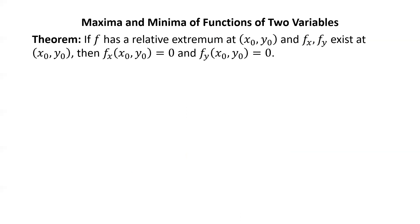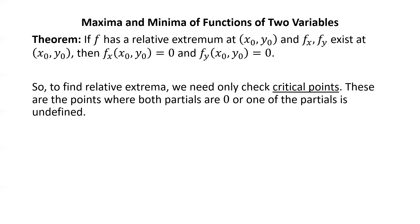An important theorem: if a function f of two variables has a relative extremum at the point (x₀, y₀), and the partial derivatives with respect to x and y exist at (x₀, y₀), then those partial derivatives are equal to 0 at (x₀, y₀). So to find relative extrema, we need only check critical points — these are the points where both partials are 0, or one of the partials is undefined.